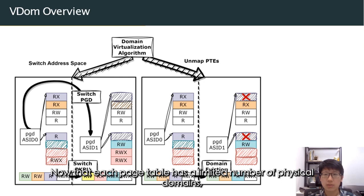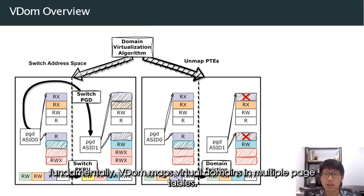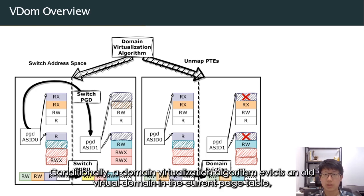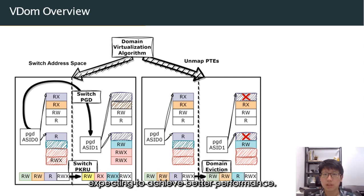Now that each page table has a limited number of physical domains, fundamentally VDOM maps virtual domains in multiple page tables. The application usually switches to another address space to access a virtual domain that is unmapped in the current page table. Conditionally, a domain virtualization algorithm evicts an old virtual domain in the current page table, expecting to achieve better performance.